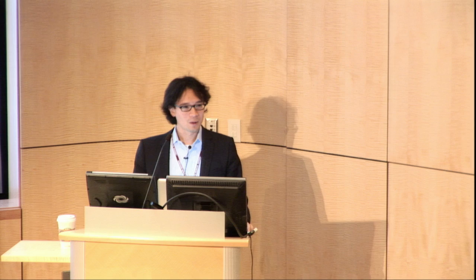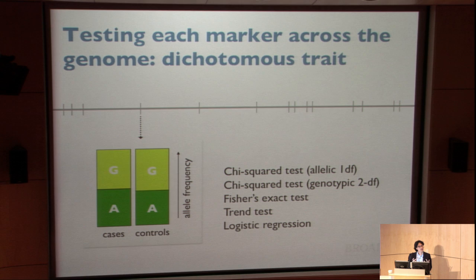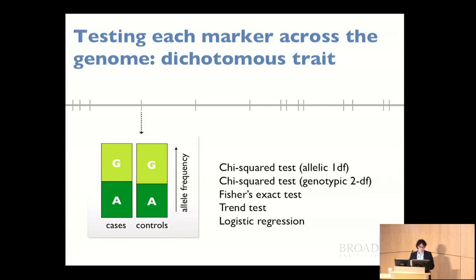How Illumina and Affymetrix then selected markers depends on the platform. For example, the early Illumina Human Hap 300 had 317,000 markers based on the LD structure in the CEPH population. It turns out there is more correlation — more LD — in European populations than in African populations, so they built a platform that gave good coverage in European populations. This fed into a frenzy of disease genetics studies of European cohorts.